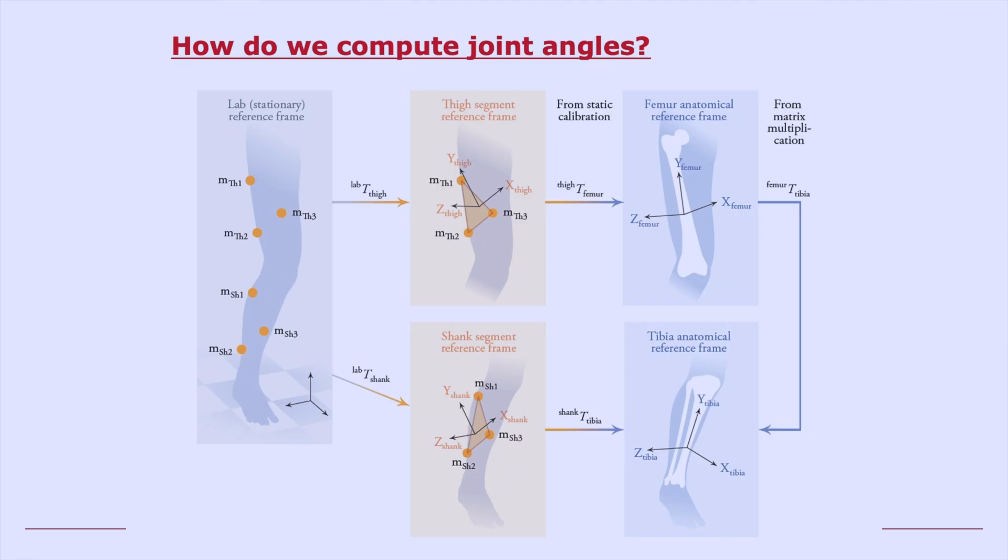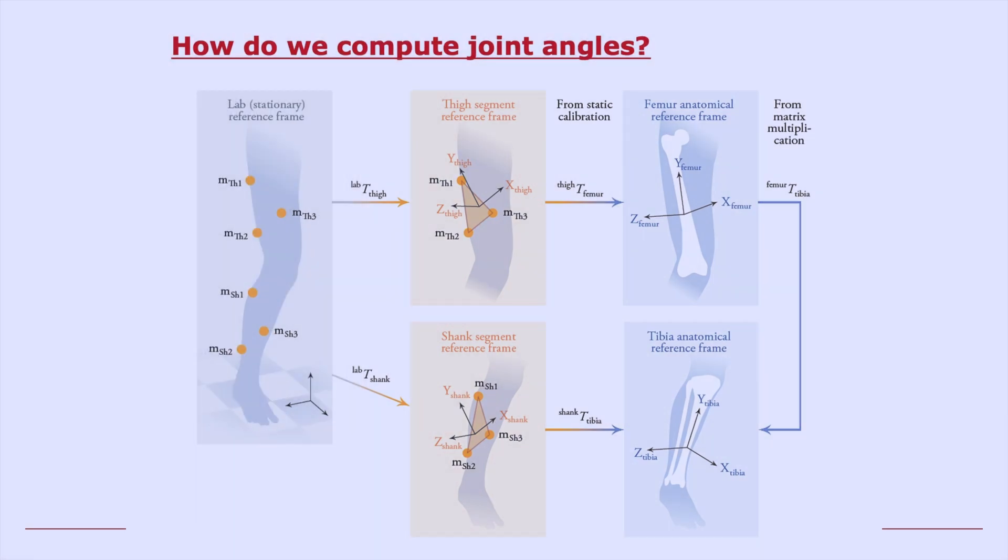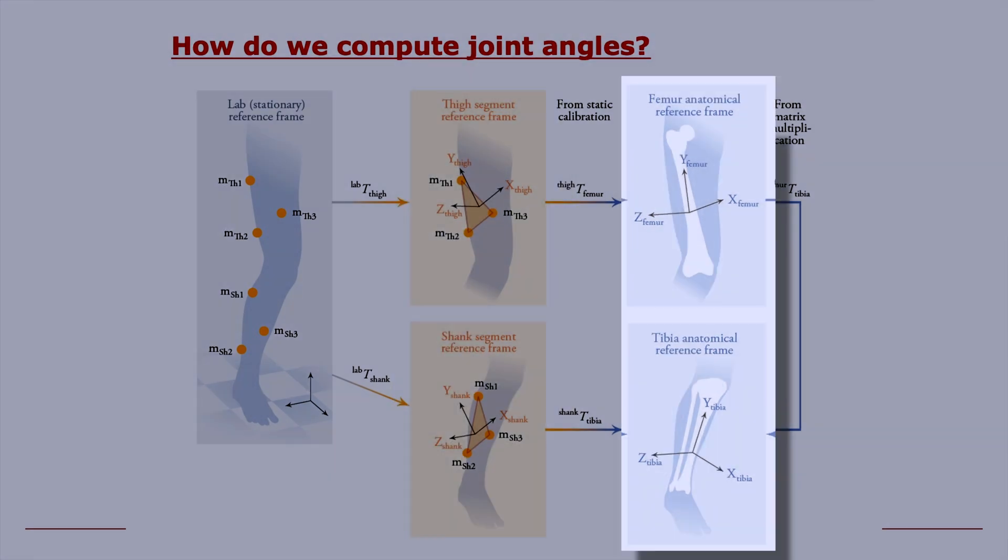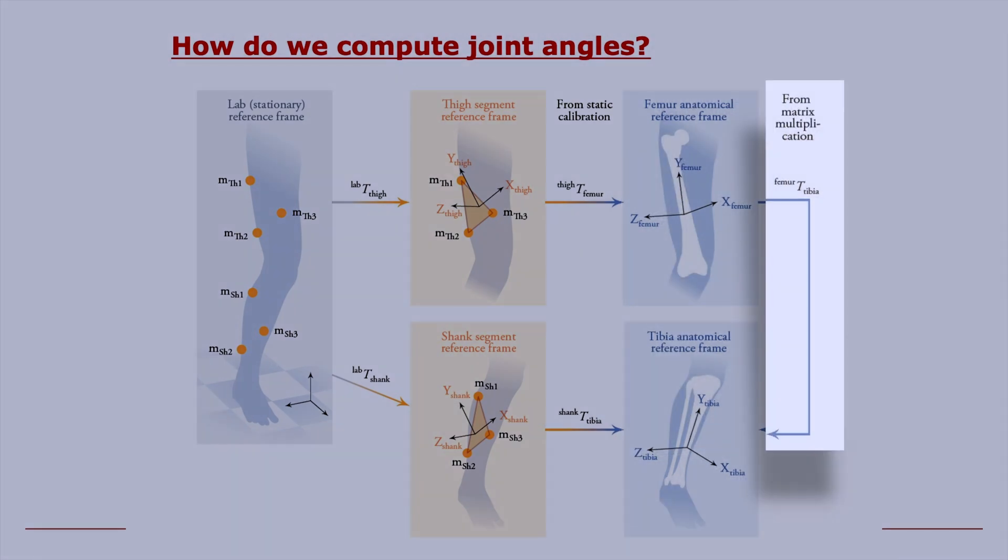We're going to first track markers relative to a lab or stationary frame. We'll use those markers to set up reference frames on our body segments. We'll relate those to anatomically relevant reference frames, and then the relationship between anatomical reference frames on adjacent body segments will define our joint angles.